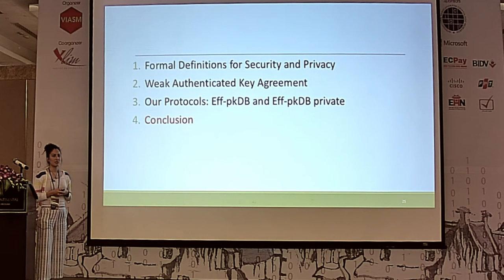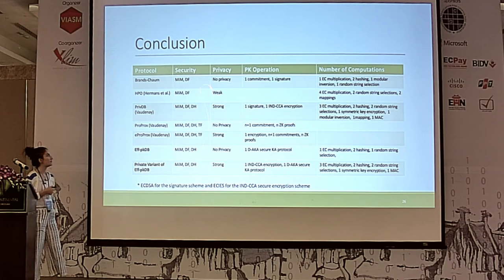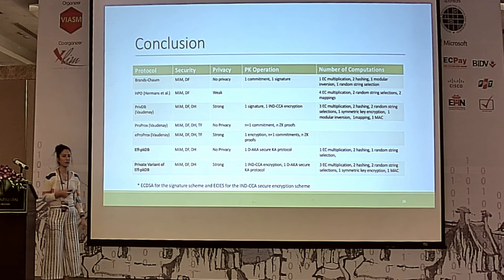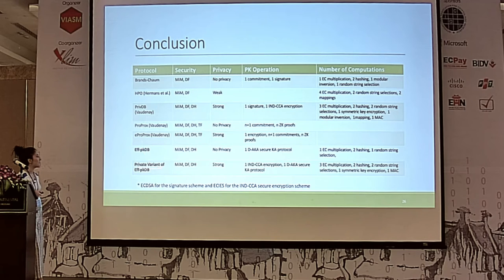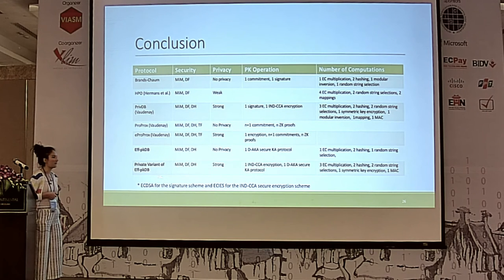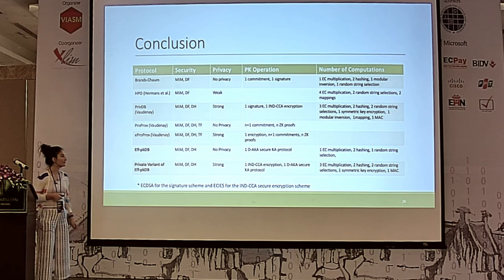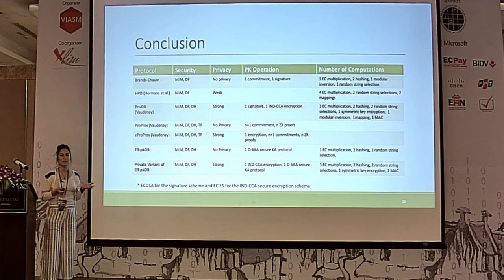Comparing our distance bounding protocol with previous ones: we have columns for security, privacy, public key operations, and number of computations required. Compared to HPO, our private variant of FPKDB achieves stronger security and stronger privacy with fewer operations on the prover side. PrivDB has the same security as our private variant, and we are slightly more efficient. Additionally, we have a non-private variant FPKDB — since not all applications require privacy, it is feasible to use FPKDB instead of the private variant.